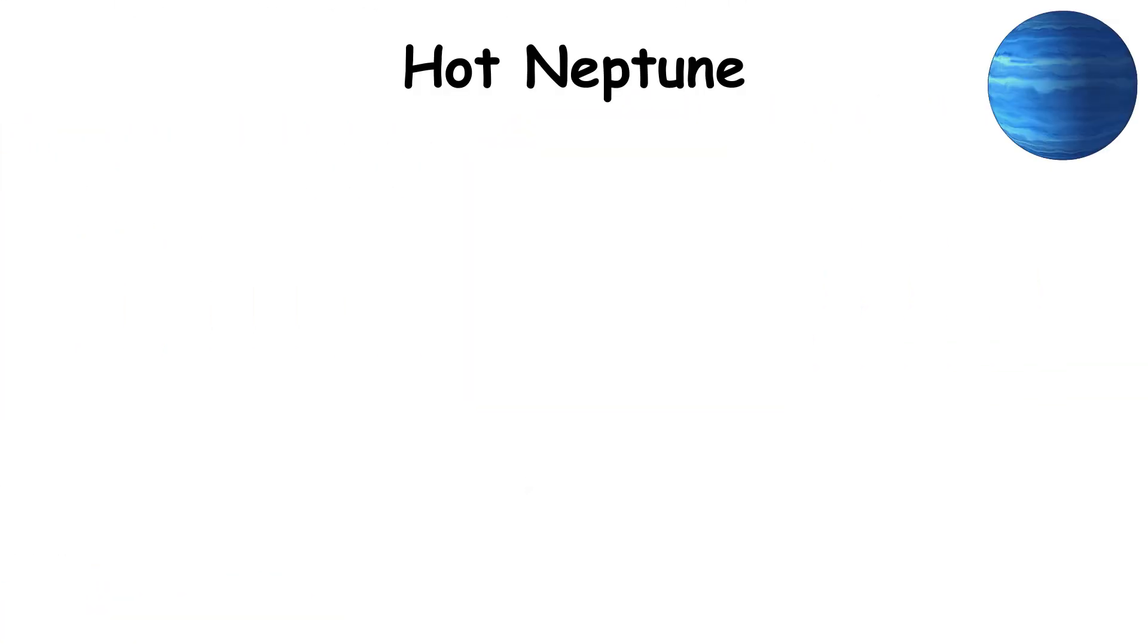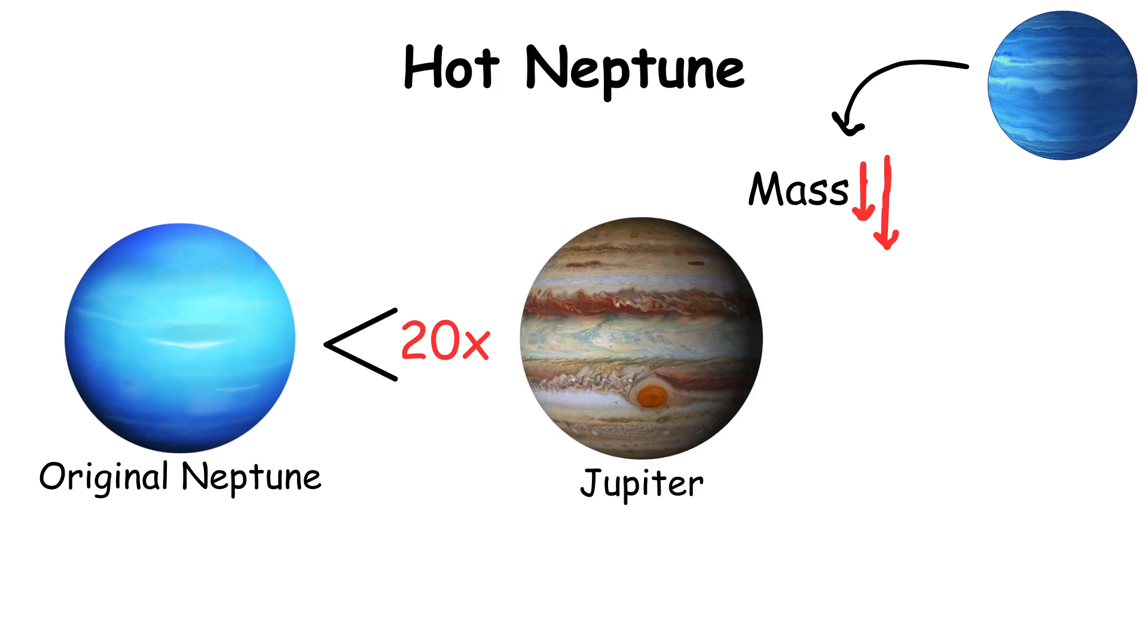A hot Neptune has a smaller mass, closer to that of Neptune, which is about 20 times less than Jupiter, and which also orbits close to its star.